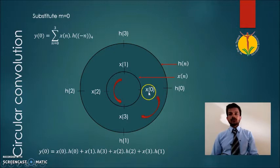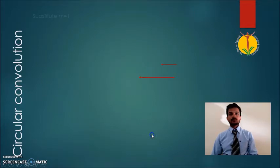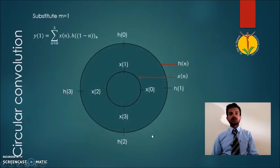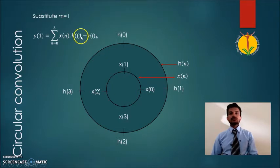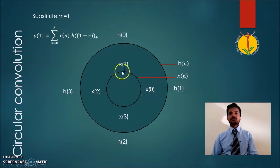We multiply the four samples: x of 0 times h of 0, x of 1 times h of n, and so on. When we substitute the next value of m, we get the second circular convolution sample. The h of n sequence is shifted by one sample, so the outer circle is shifted by one sample, and following the same multiplication and addition steps: x of 0 h of 1, plus x of 1 h of 0, plus x of 2 h of 3, plus x of 3 h of 2, giving the next convolution sample.